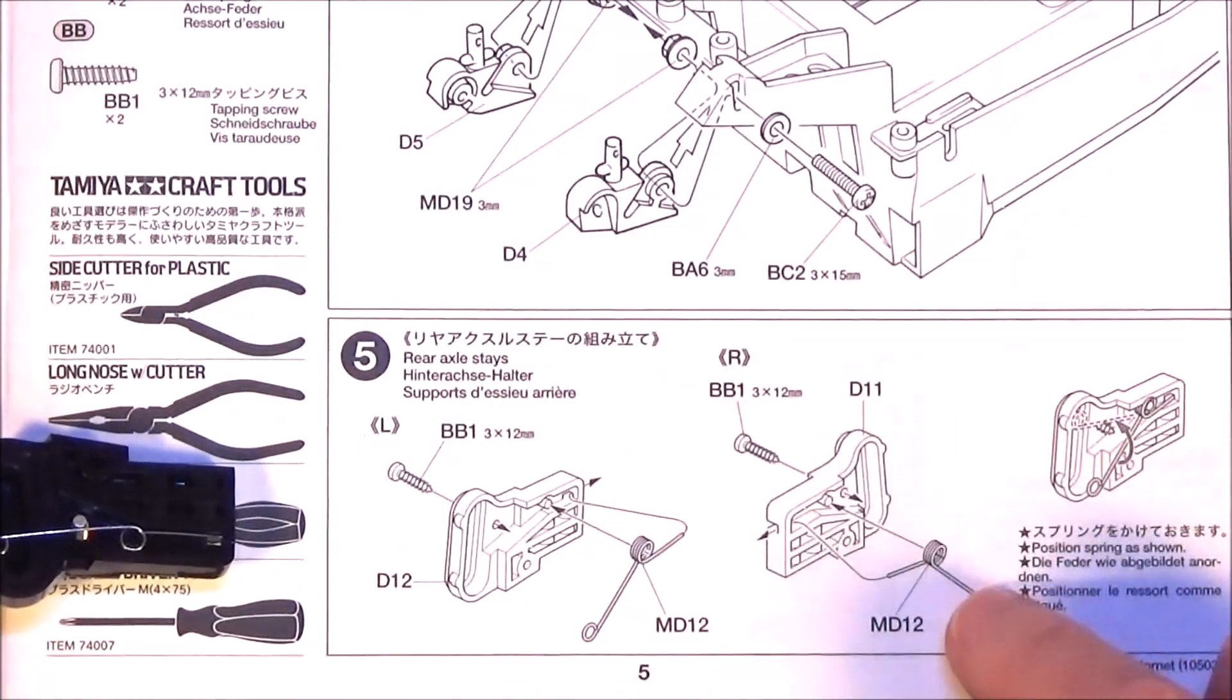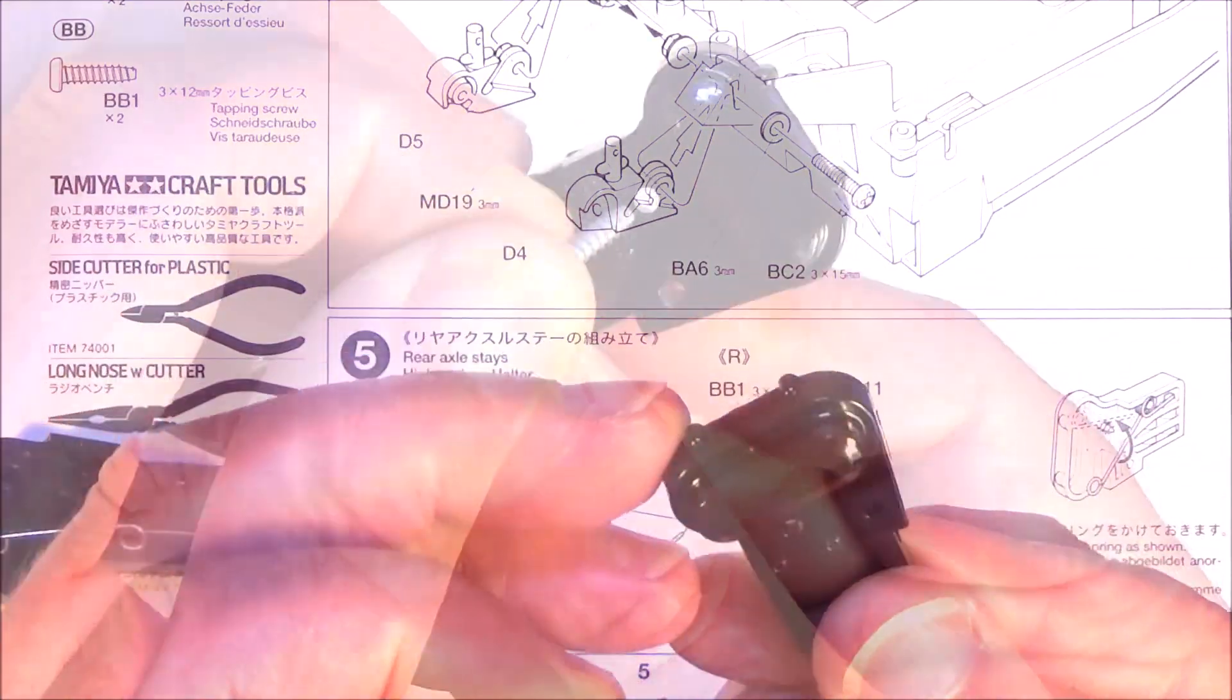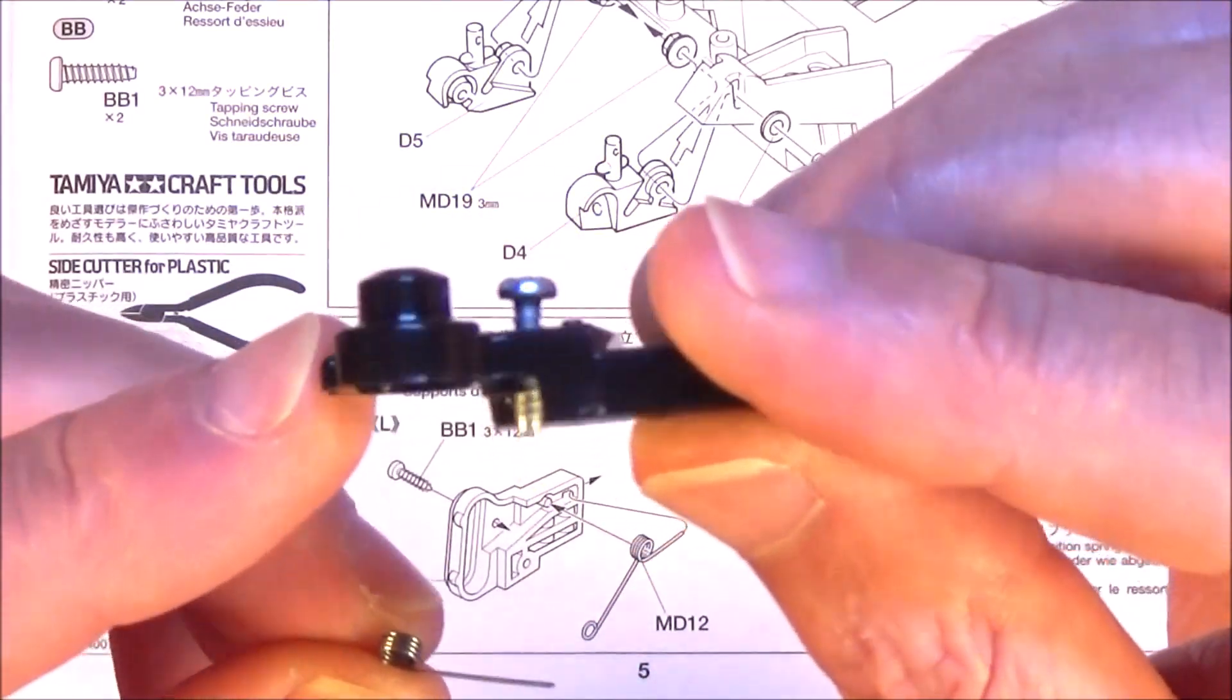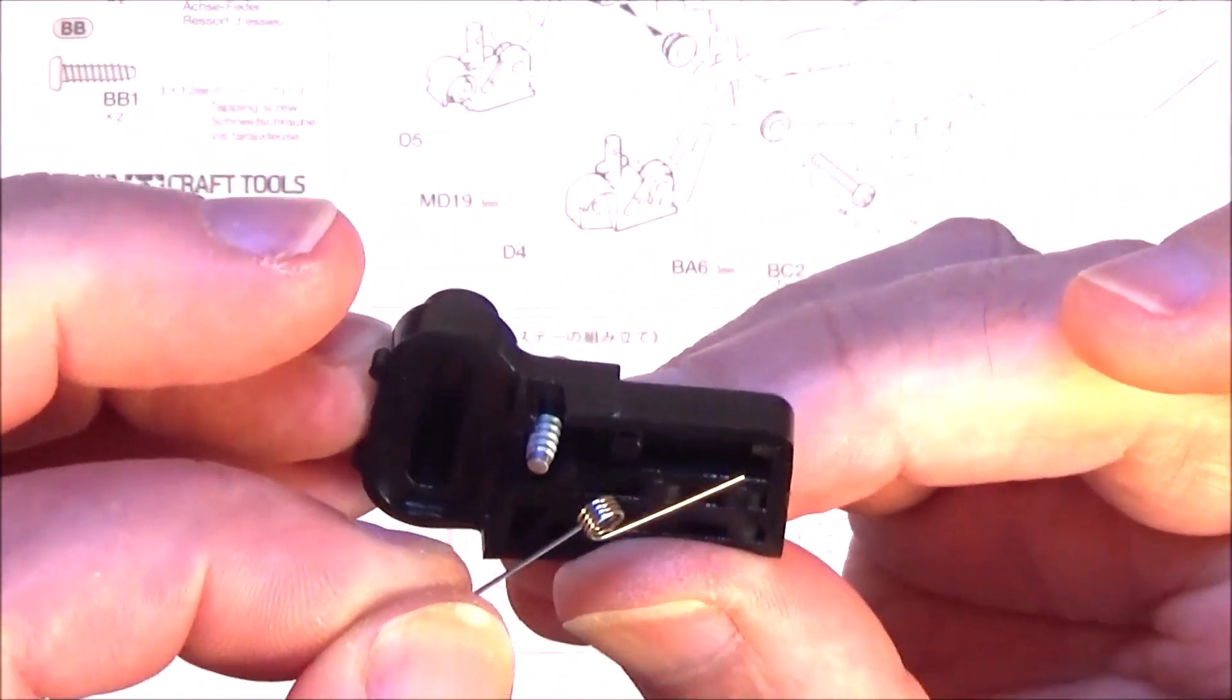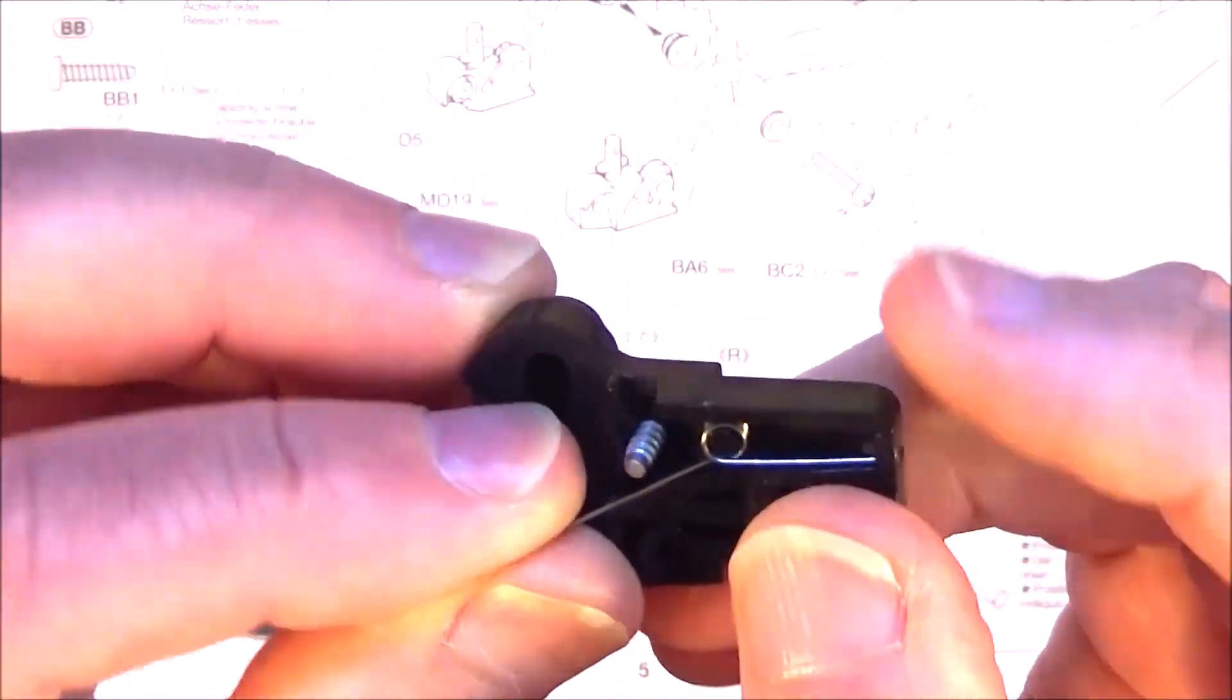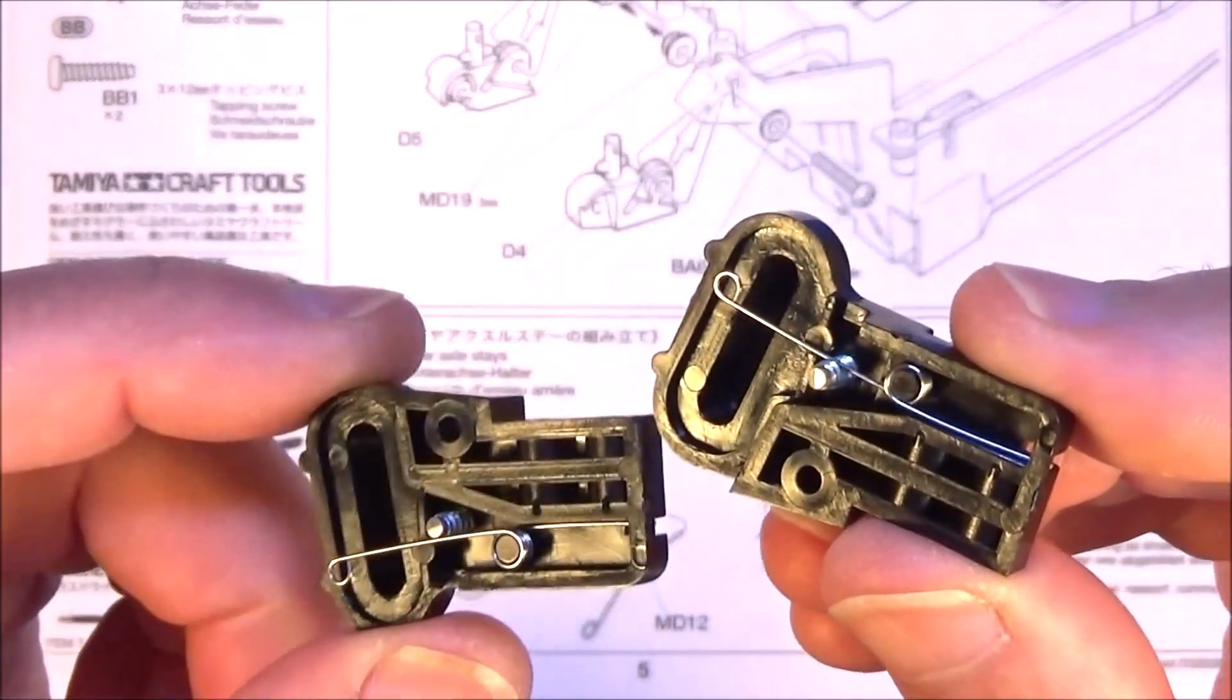Step five is basically putting the little springs into the rear axle stays, which are parts D11 and D12. So you just get one of the parts, get your 12mm self-tapper and pop in that hole there at the top. Just screw that in but you don't need to screw it in the whole way. About that far will do. And get your little spring, pop the one end in the hole at the back and pop the loop in the spring around the tab that's sticking out there. And then you just want to put the spring up above the screw that you've inserted. So it should look something like this. Obviously make two.